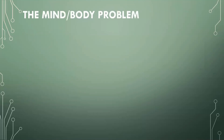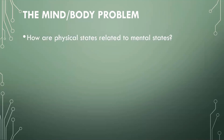So here is the mind-body problem. We can put it in a question: how are those physical states related to the mental states that we have? How does our physical body and the characteristics it has relate to our mind and the mental states that we experience? In this brief introduction, I'm going to talk about three different approaches to answering this question.